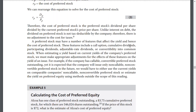Preferred stock has a number of features that affect its yield and hence the cost of preferred stock. These features include a call option, cumulative dividends, participating dividends, adjustable rate dividends, and convertibility into common stock. When estimating a yield based on the current yield of the company's preferred stock, we must make appropriate adjustments to account for the effects of these features on the yield. For example, if the company has a callable convertible preferred stock outstanding yet it is expected to issue non-callable preferred stock in the future, we would use the current yield or comparable non-convertible preferred stocks to estimate the yield on preferred equity.